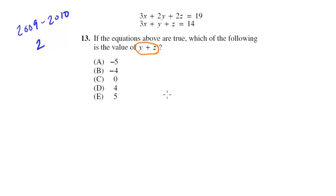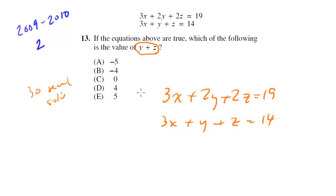Let's look at these equations. We've got 3x plus 2y plus 2z equals 19, and 3x plus y plus z is equal to 14. You might start rearranging, doing some substitutions. I'm sure there's other longer ways of doing it, but remember we want to find that 30 second solution. I want to have y plus z left, so I'm going to stack them, and let me subtract the bottom from the top. The 3x is going to cancel, 2y minus y is y, 2z minus z is z, 19 minus 14 is 5.